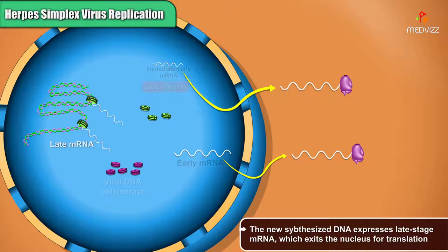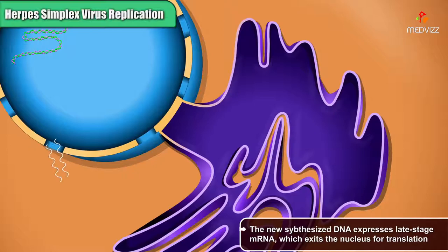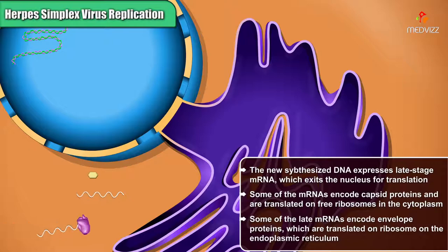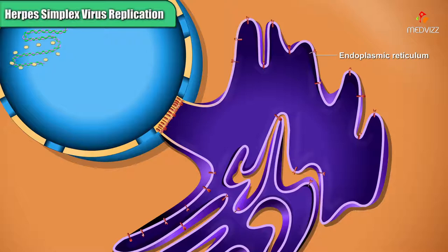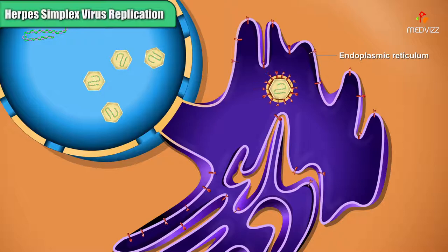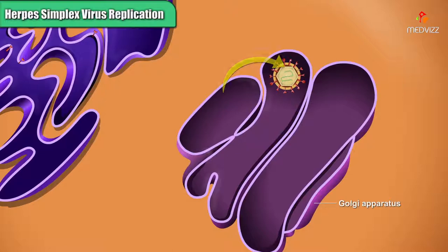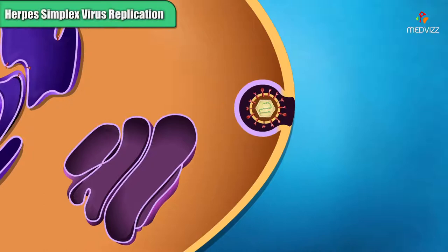The newly synthesized DNA expresses late-stage mRNA, which exits the nucleus for translation. Some of the mRNAs encode capsid proteins and are translated on free ribosomes in the cytoplasm. Some of the late mRNAs encode envelope proteins, which are translated on ribosomes on the endoplasmic reticulum. Many late-stage proteins re-enter the nucleus to form capsids, and these capsids capture DNA genomes. A capsid buds through the inner nuclear membrane, becoming enveloped by a single membrane. The developing virion moves through the endoplasmic reticulum and buds off, after which it fuses with the Golgi apparatus. The virion eventually buds off the Golgi apparatus and fuses with the plasma membrane.